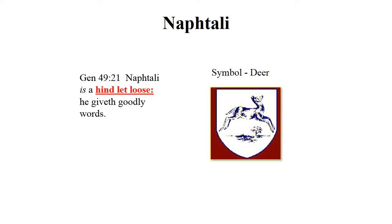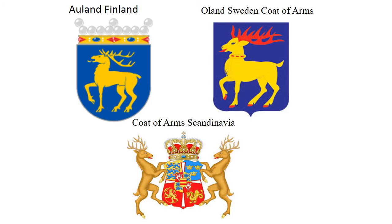Let's start with the tribe of Naphtali. Naphtali's symbol was a deer. We see this in Genesis 49:21 — 'Naphtali is a hind let loose,' which means a deer. We believe the tribe of Naphtali can be found in the area of Scandinavia. Notice the coat of arms of Finland, Sweden, and Scandinavia all have deer on them.